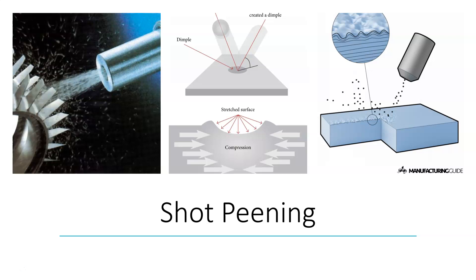In some cases, shot peening has been done on motorcycle gas tanks to give a nice dimple effect — so it can actually have a cosmetic appearance that is desirable to some people.